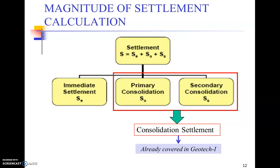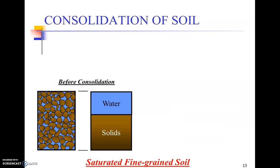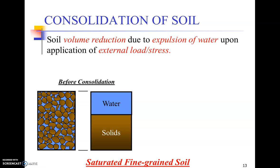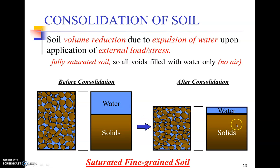We have already covered consolidation settlement in Geotechnical Engineering 1, but we will briefly revisit it here. Considering the phase diagram, soil comprises water in the voids and solid soil particles. Soil solids are not compressible; when compressed, water takes the entire stress, generating pore water pressure. Soil volume reduction due to expulsion of water upon application of external load is called consolidation settlement. For fine-grained soils, water trapped in small voids takes a long time to escape, explaining different consolidation behavior. After consolidation, soil volume stabilizes but the void volume may change significantly.